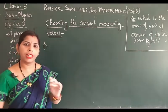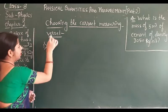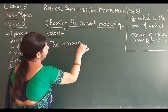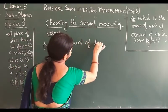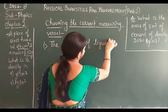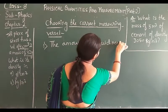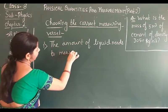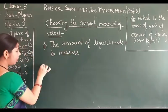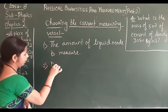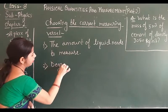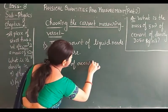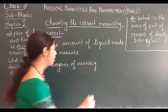First, the amount of liquid that needs to be measured. And the second important thing is the degree of accuracy — the degree of accuracy with which the volume must be measured.